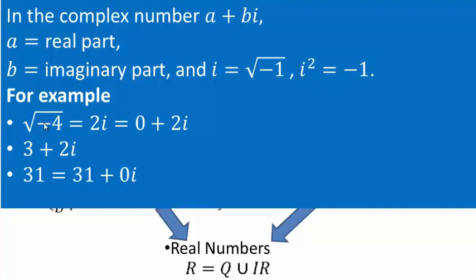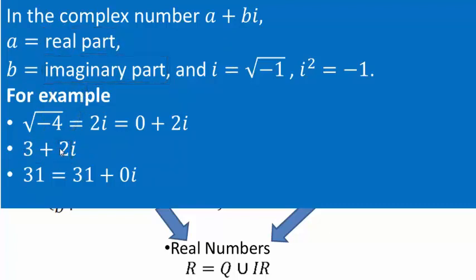We can use i for expressions like square root of negative 4, which can be written as 2i because square root of 4 is 2. So all square roots of negative numbers can be written using the letter i. Note that i is not a variable — it is a number, specifically a complex imaginary number. In the number 3 plus 2i, 3 is the real part and 2 is the imaginary part. This is a complex number that is not a real number. However, 31 is a real number and is also a complex number, because it can be written as 31 plus 0i. If the imaginary part is 0, then all real numbers are complex numbers.